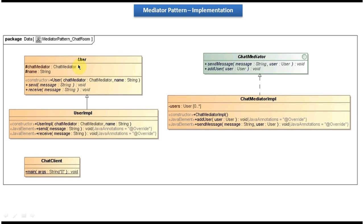On the left side you can see User. This User is an abstract class and it has two abstract methods: send and receive. These methods will be implemented by the concrete class UserImpl. The send method is used to send a message to the chat room, and the receive method is used to receive a message from the chat room.